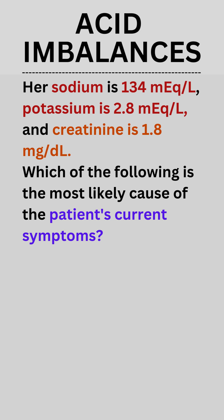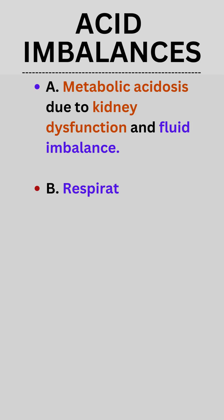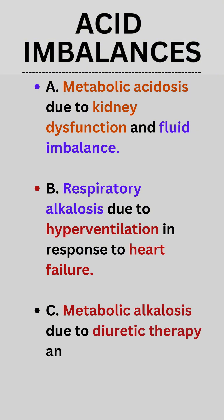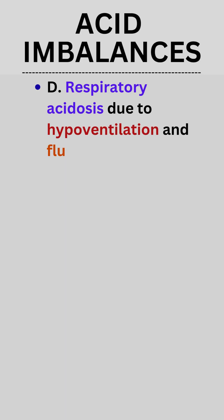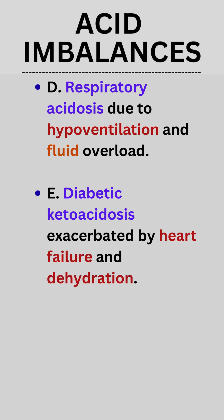Which of the following is the most likely cause of the patient's current symptoms? A. Metabolic acidosis due to kidney dysfunction and fluid imbalance. B. Respiratory alkalosis due to hyperventilation in response to heart failure. C. Metabolic alkalosis due to diuretic therapy and potassium depletion. D. Respiratory acidosis due to hypoventilation and fluid overload.